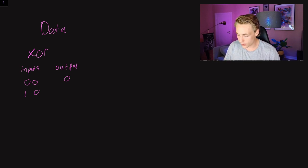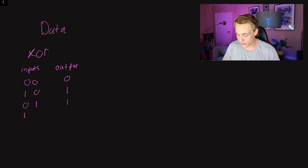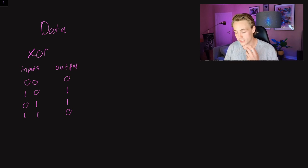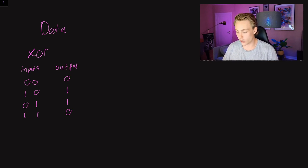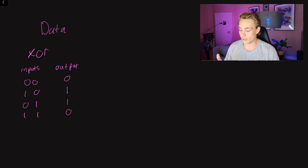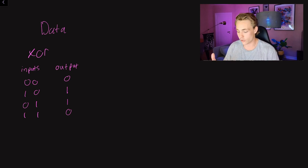If we have a one and a zero as input, the output will be a one. And also if we have a zero and a one, the output will also be a one. But if we have two ones as input, we will have zero — this is the XOR logical function. Only if one of the two inputs is a one will the output be a one. This is the data we want to train our neural network on.